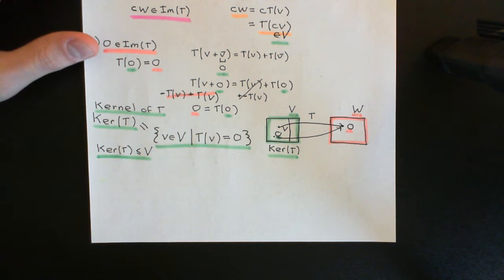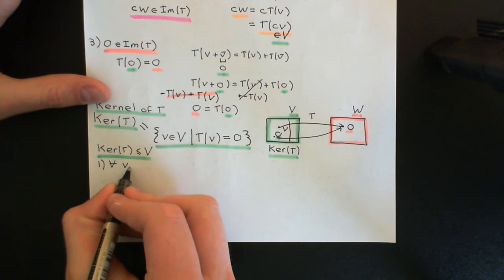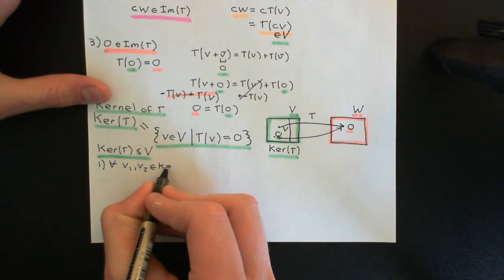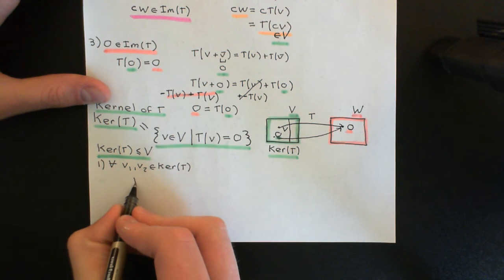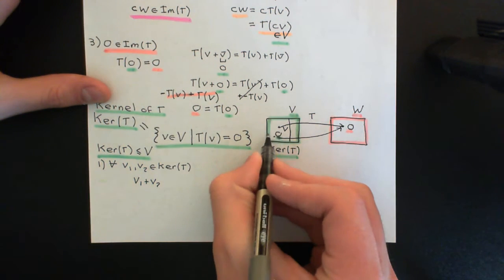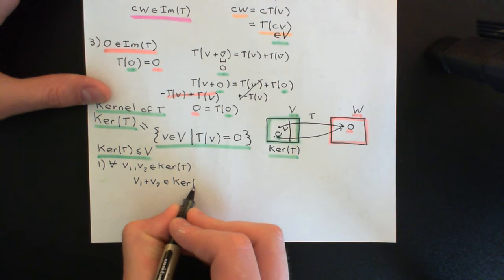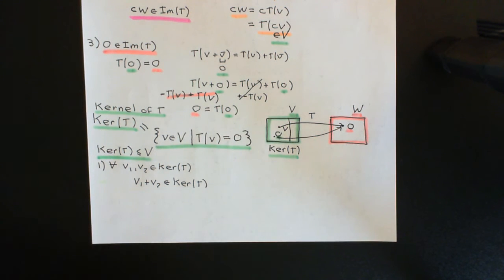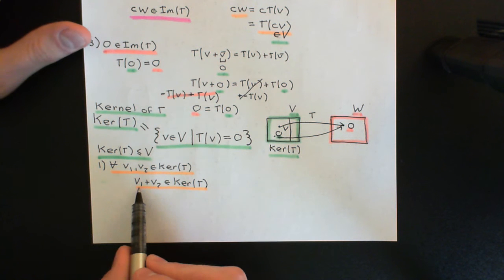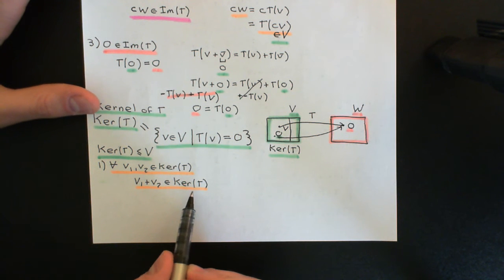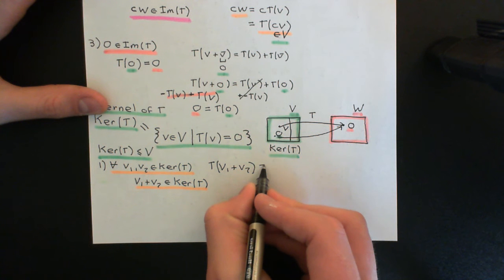Let's go through the three criteria. Criterion number one: we need to prove that the subset is closed under addition. So I need to prove that for all v1 and v2 which are elements of the kernel of the linear transformation — any two elements of this subset of domain vectors mapped to zero — it must be the case that v1 plus v2 is also an element of the kernel. If we want v1 plus v2 to be in the kernel, that means T must map v1 plus v2 onto the zero vector.